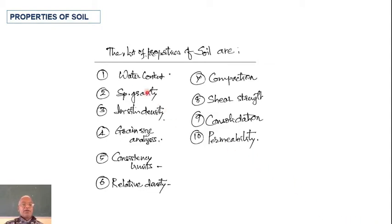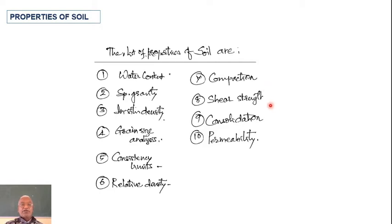On the left hand side we have water content, specific gravity, in-situ density, grain size analysis, consistency limits, and relative density. Then afterwards we have compaction properties, shear strength properties, consolidation properties, and the last one is permeability of the soil.